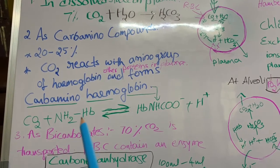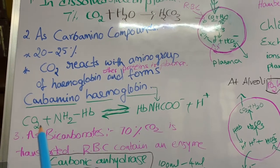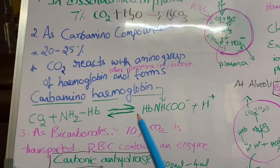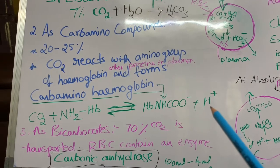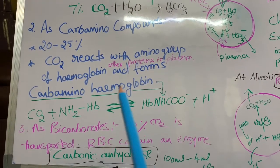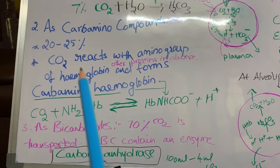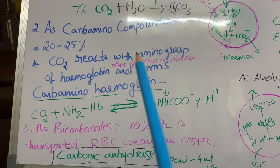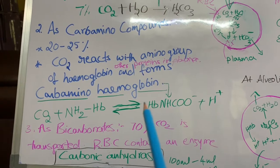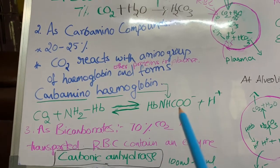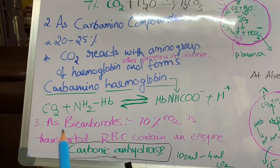The amino group (NH₂) of hemoglobin reacts with carbon dioxide and forms carbamino hemoglobin (Hb-NHCOO⁻) and liberates H⁺ ions. Carbon dioxide also reacts with amino groups of other proteins present in the plasma, but carbamino hemoglobin is the major one formed in the blood.